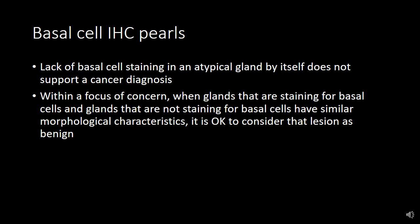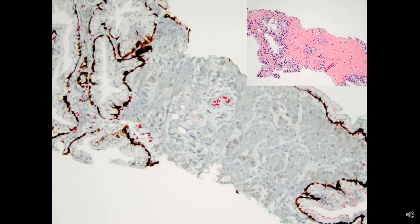Two key IHC pitfalls to remember: lack of basal cell staining in an atypical gland by itself does not mean you are dealing with a cancer diagnosis. You must carefully correlate with the morphological impression. Within a focus of concern, when glands that stain for basal cells and glands that do not stain have similar morphological characteristics, it is acceptable to consider that lesion benign even with that atypical staining pattern. It is also very important to have a strong internal control when interpreting basal cell immunohistochemistry. If your benign glands are lacking basal cell staining, you cannot make much of the absence of staining in your focus of concern.